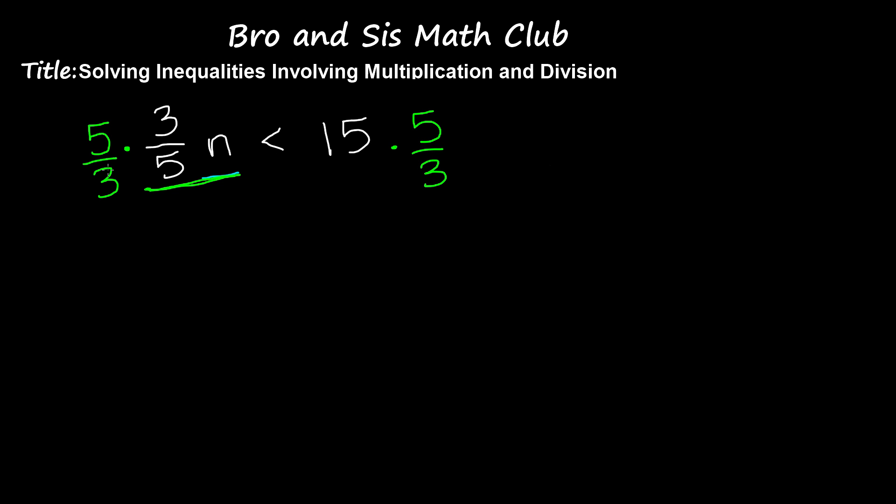When you multiply 5 over 3 by 3 over 5, the 5 and the 5 cancel each other out, and the 3 and the 3 cancel each other out. We're left with n is less than, and then 15 times 5 is 75, 75 divided by 3 gives us 25. So n is less than 25. This is the solution to our inequality. Now let's do another one.